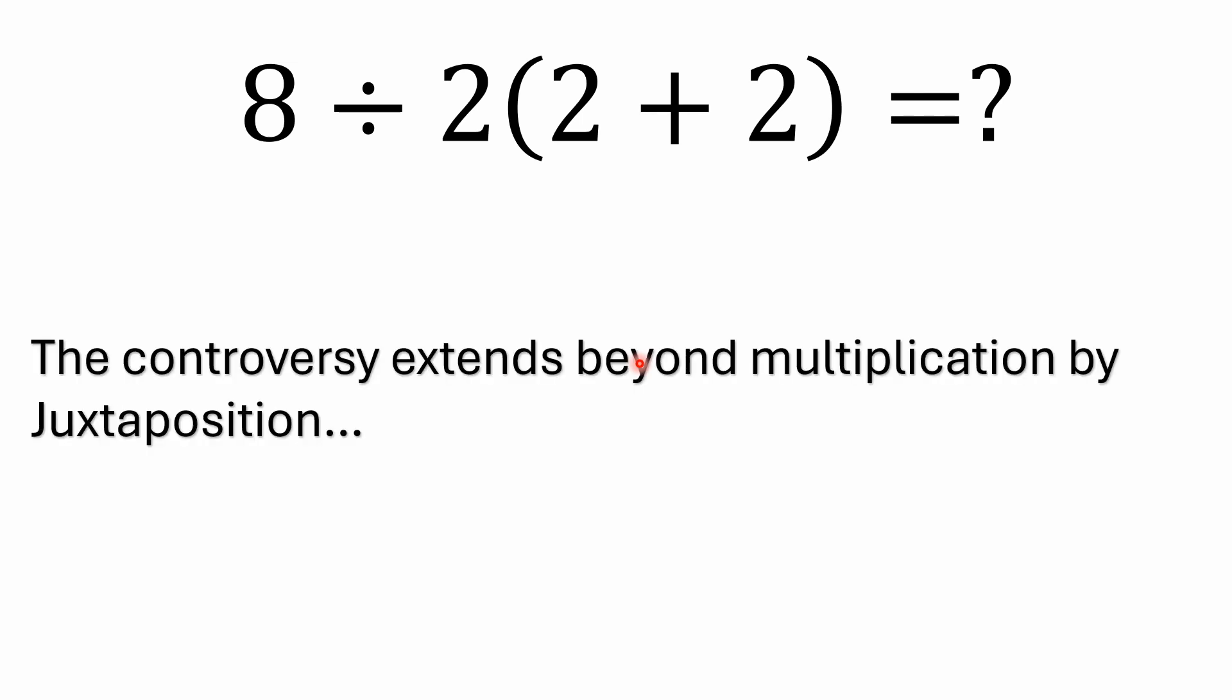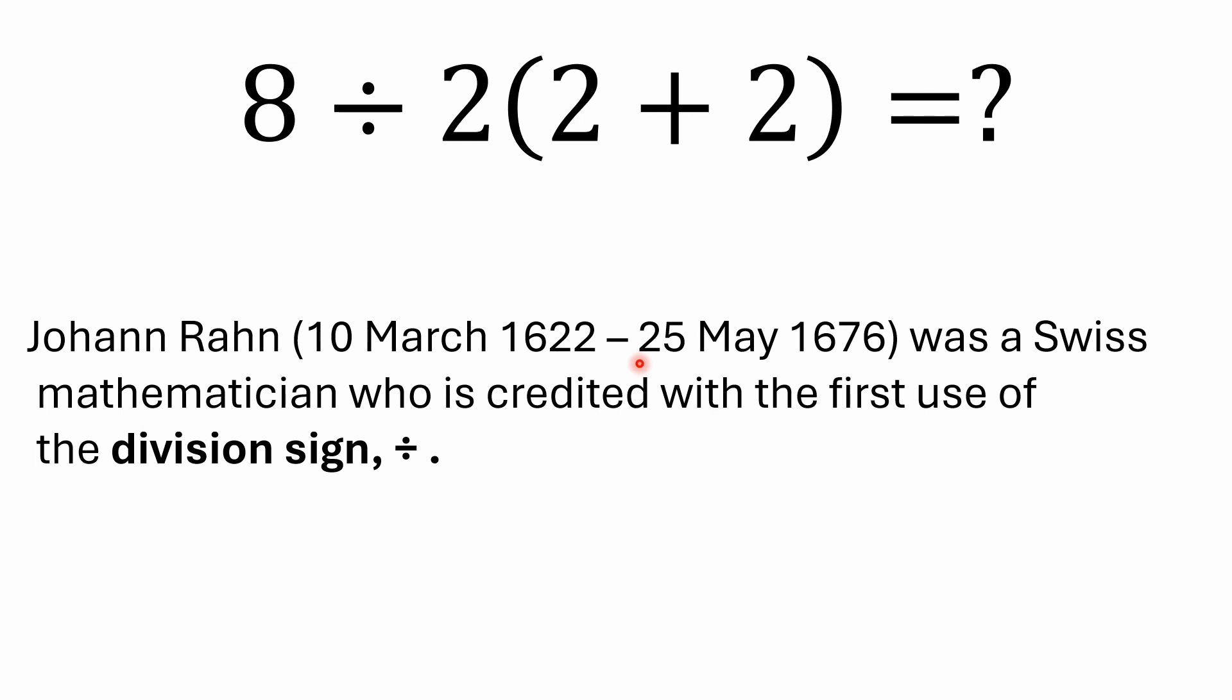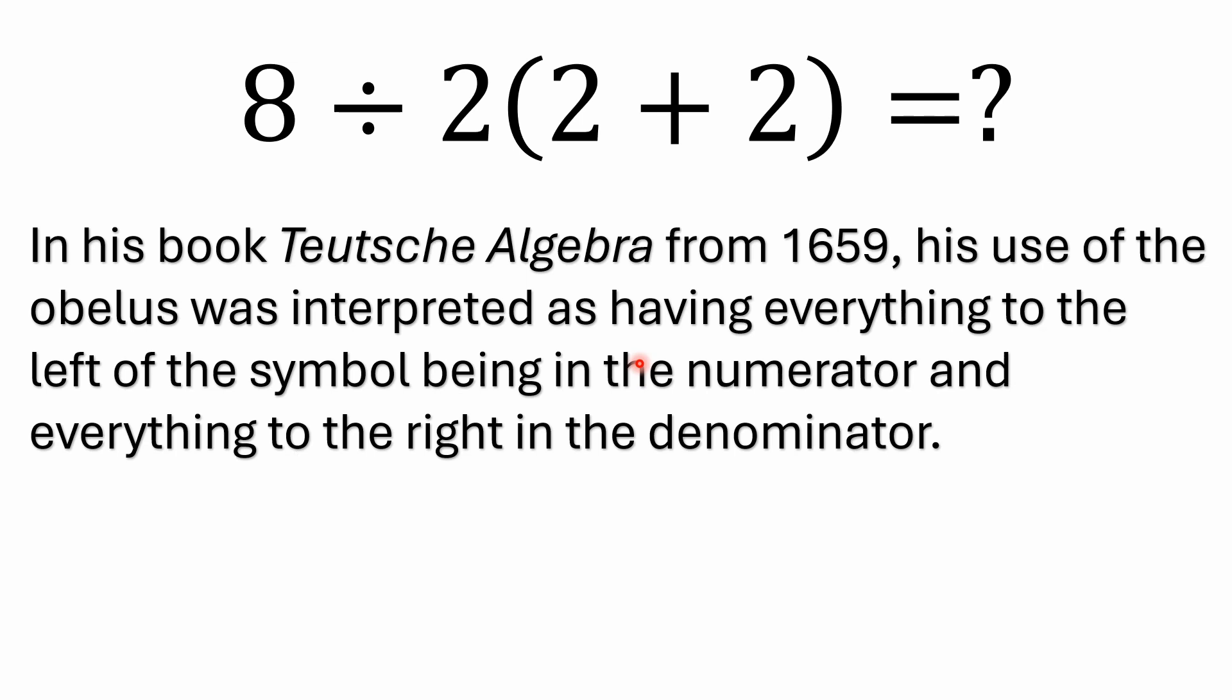There is context for the obelus. It just goes beyond the whole implicit multiplication thing. Back in Teutsch Algebra, a book from 1659, the obelus first appeared for division. It's been interpreted differently over the centuries. Back in 1659, it was Johann Rahn, who lived between 1622 and 1676. He was a Swiss mathematician who's credited with the first use of the division sign, or also known as the obelus. And back then, everything to the left of that symbol was considered to be in a numerator, and everything to the right would be in a denominator. So what you would end up with would be 8 divided by 8, or 1.